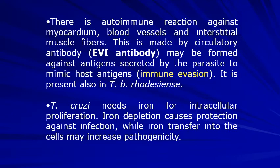The blood vessels and interstitial muscle fibers are also affected. This is mediated by circulating antibody, called EPI antibody, which may be formed against antigens secreted by the parasite to mimic host antigens. This is also a method involving immunoglobulin M, and is present sometimes in Trypanosoma brucei CNS involvement. The trypomastigotes need iron for intracellular proliferation, so iron depletion can cause protection against infection, while iron transfer into the cells may increase pathogenicity. This means anemic people are not as severely affected by trypomastigotes as those with normal hemoglobin levels.